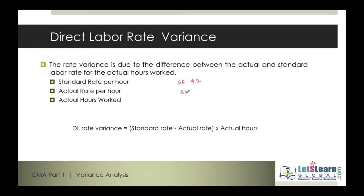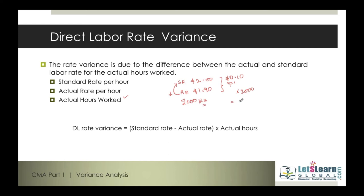But the actual rate paid was $1.90. We negotiated well and paid only $1.90 for the same work. The actual rate paid compared to the standard rate is lower, so we have a favorable variance of $0.10. Say for example this company worked for 2,000 direct labor hours. This variance times 2,000 equals $200 favorable variance.